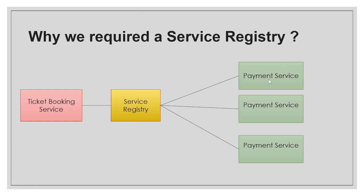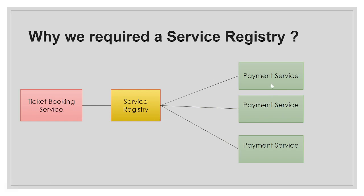Consider this example: we have two services — ticket booking service and payment service. We are calling from ticket booking service to payment service. We have three instances of payment service running under different ports, for example 8081, 8082, and 8083. A load balancer will identify which instance it should call, so all instances need to be registered somewhere with their application details.